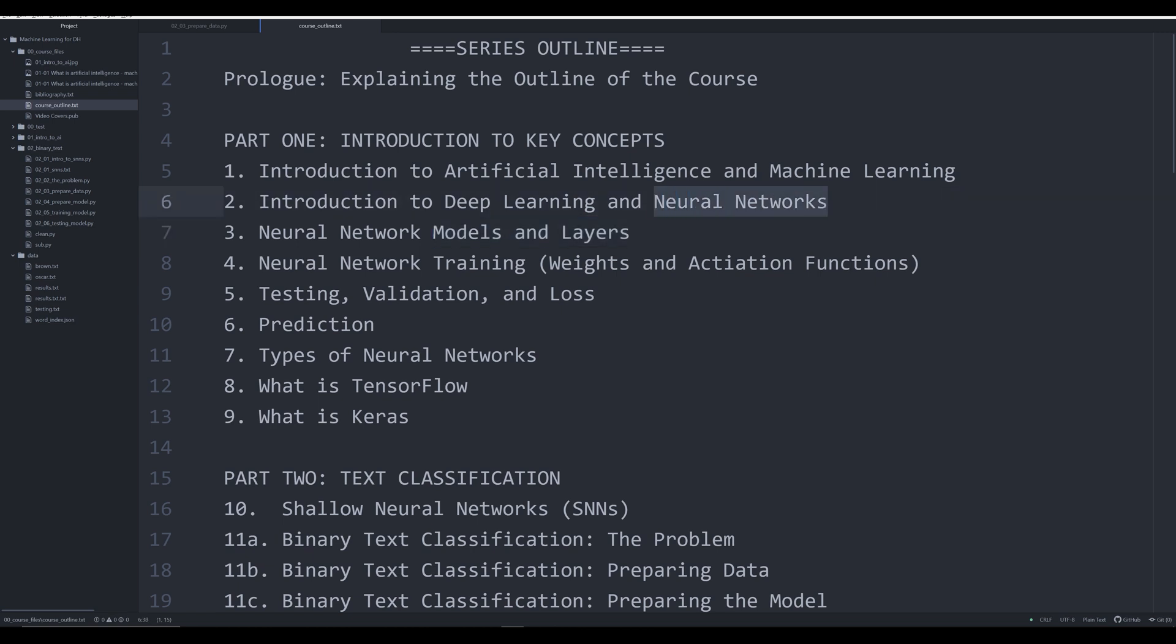We're going to be building upon the initial video which explored the general architecture of a neural network. We're going to be looking at specifically training, how training works, what key concepts are occurring that you need to be familiar with for doing training through neural networks, such as weights and activation functions, and some of the more problematic outcomes of training, specifically overfitting and underfitting neural network models. So let's go ahead and jump right in.